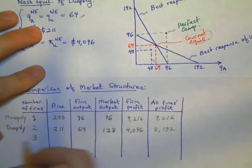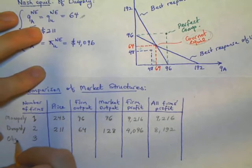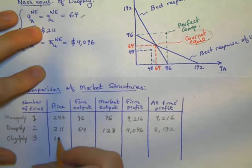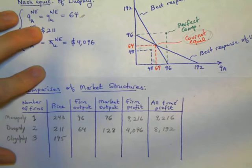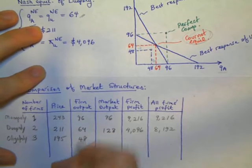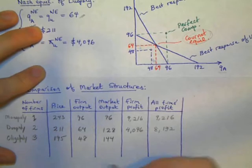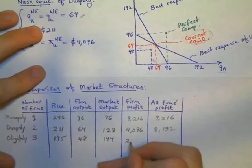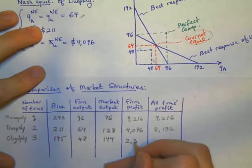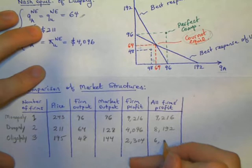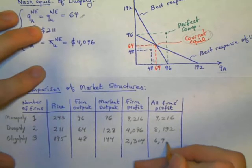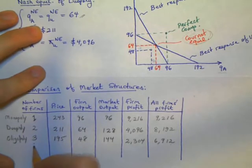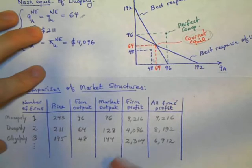We can keep increasing the number of firms. For instance, in the case where we have three firms, it would be an oligopoly. The market price will drop even further to $195, and each firm will produce 48 units for a combined output of 144 units produced in the market. Each firm will earn only $2,304 of profits, for a combined profit of $6,912.